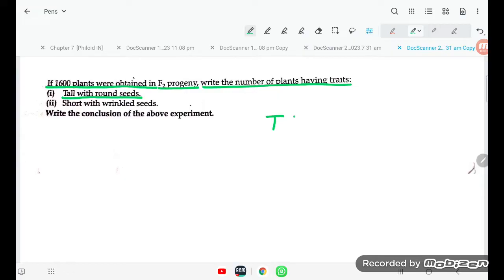So what are the ratio? TTRR, this is the 9, small t small t capital R capital R, this is 3.